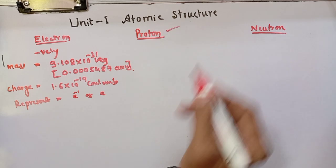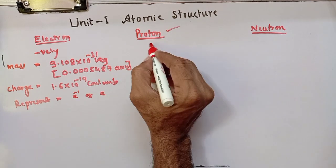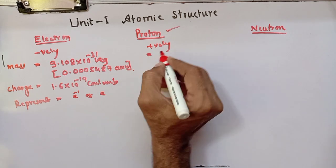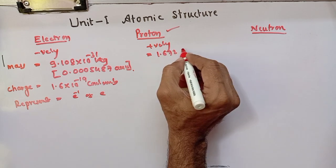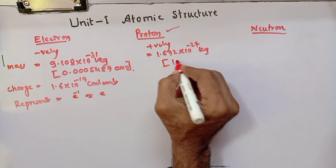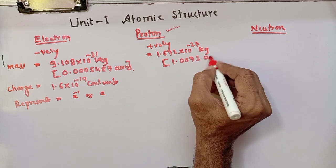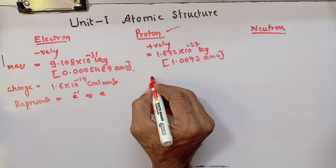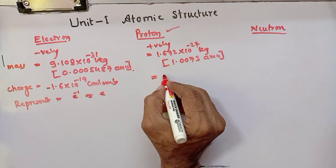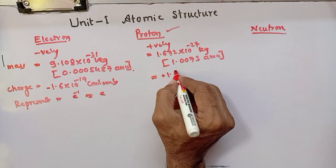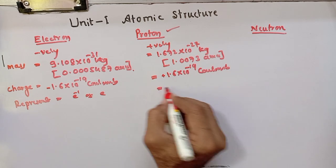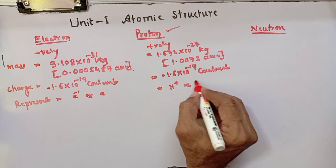The charge on the electron is equal to 1.6×10⁻¹⁹ coulomb and it is represented as e⁻. Similarly, if you consider the proton — the next fundamental particle — it is a positively charged particle present in the nucleus. Its mass is 1.672×10⁻²⁷ kg or 1.0073 atomic mass unit. The charge is the same magnitude but opposite sign: +1.6×10⁻¹⁹ coulomb, and it is represented as H⁺ or p.